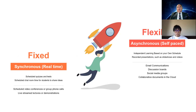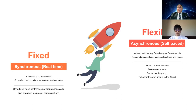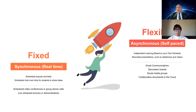There are two ways that online programs are delivered. The first is flexible — asynchronous or self-paced — which is independent learning based on your own schedule, including recorded presentations such as slideshows and videos. All Ontario programs must have 110 hours of instructional learning. For asynchronous learning, you complete those 110 hours on your own, guided by an instructor and tutors. Communication happens through email, discussion boards, social media groups, and collaborative cloud documents.